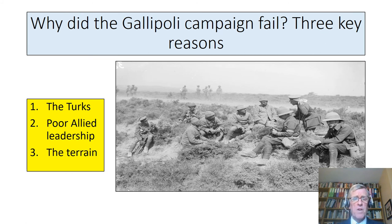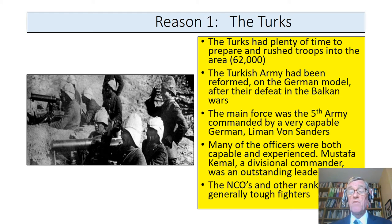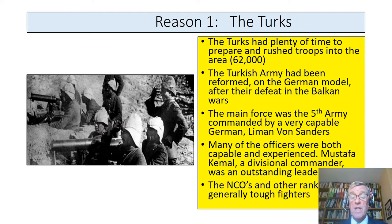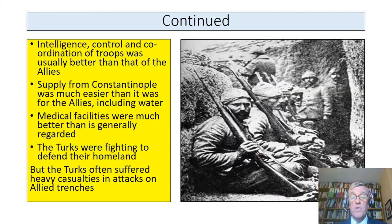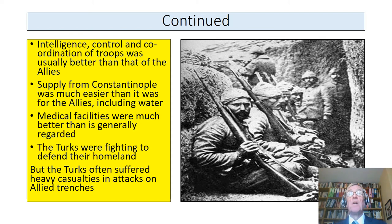So why did the Gallipoli campaign fail? Three key reasons: the Turks themselves, poor Allied leadership, and terrain. The Turks had plenty of time to prepare and rushed 62,000 troops into the area. The Turkish army had been reformed and improved after their defeats in the Balkan Wars with German help. A German officer, Liman von Sanders, commanded the main Turkish force. Many Turkish officers were both capable and experienced. Mustafa Kemal, as divisional commander, was an outstanding leader. Intelligence, control and coordination of troops was often better than that of the Allies. It was easier to get supplies, particularly water, from Constantinople. And crucially, the Turks were fighting to defend their homeland.